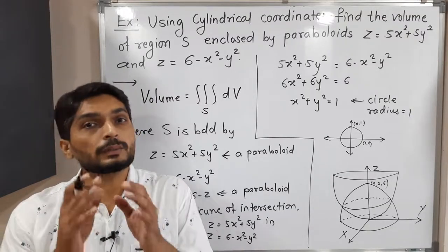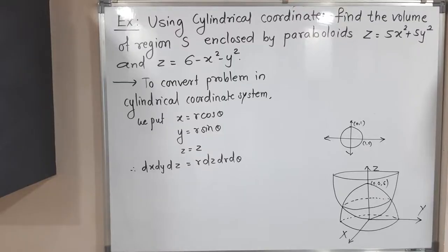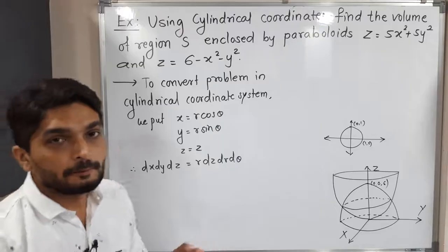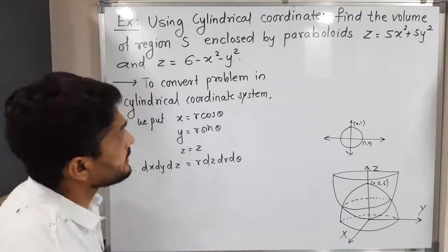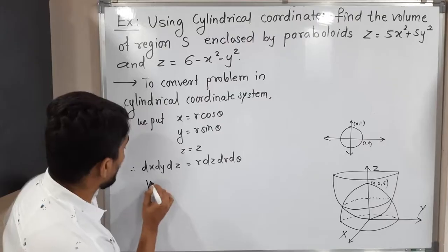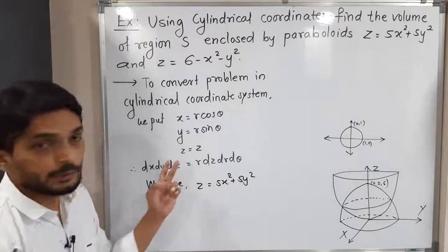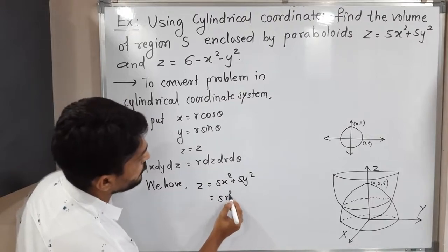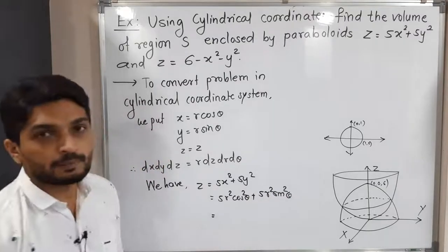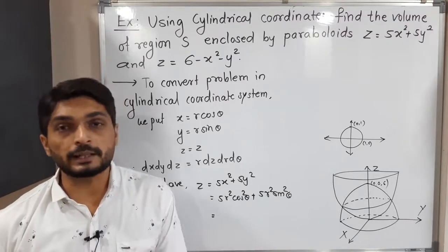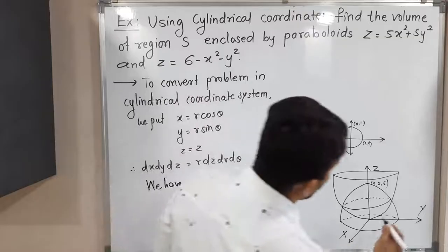In cylindrical coordinates, the volume element dx dy dz becomes r dz dr dθ. Substituting into the first paraboloid equation z = 5x² + 5y²: we get z = 5r²cos²θ + 5r²sin²θ = 5r²(cos²θ + sin²θ) = 5r². So the equation of the first paraboloid in cylindrical coordinates is z = 5r².